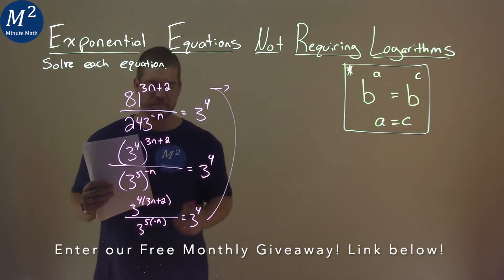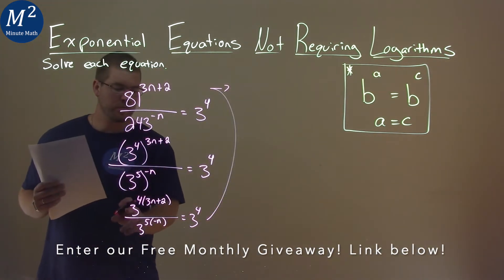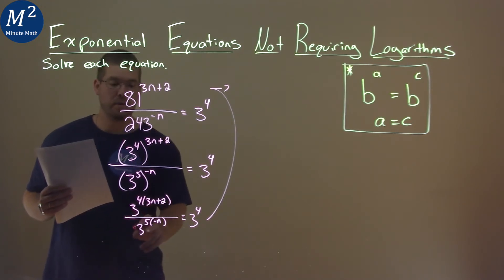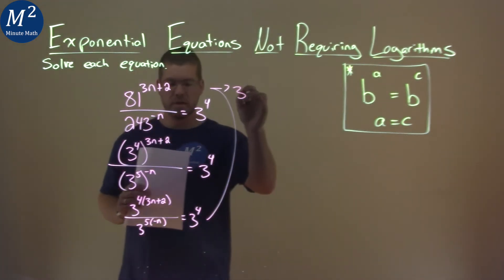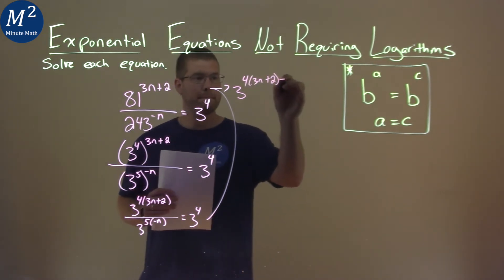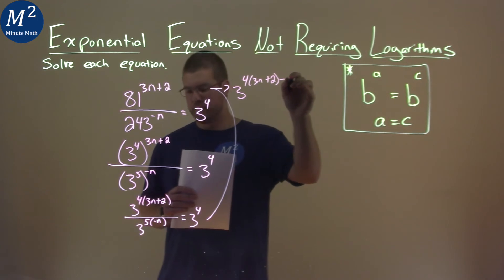Continuing on over here, our rules of division when we have the same base we subtract the exponents. So I have a 3 to the 4 times 3n plus 2 power minus the 5 times the negative n right there.